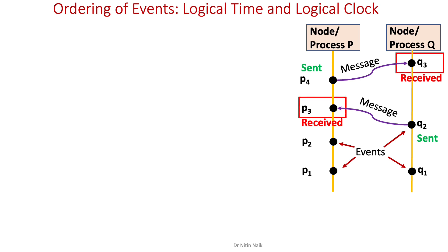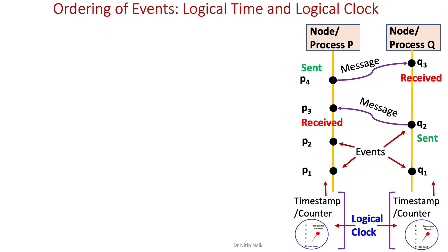Now let's look at logical time and logical clock in a distributed system using the typical space-time diagram, or Lamport's diagram, in which several local and external events are illustrated on two different nodes P and Q. A local event could be a local execution or sent message, and an external event is a received message. In this diagram, most events are local events except P3 and Q3, which are external events or received messages. We can use one logical clock on each node, meaning a separate timestamp for node P and a separate timestamp for node Q. The key question is how do we increment the counter for each new event — it depends on the type of logical clock used, for example Lamport's clock or vector clock, which are explained in my separate videos.